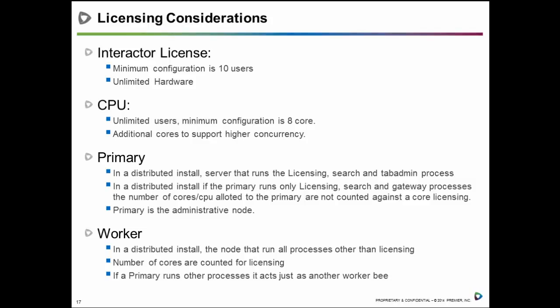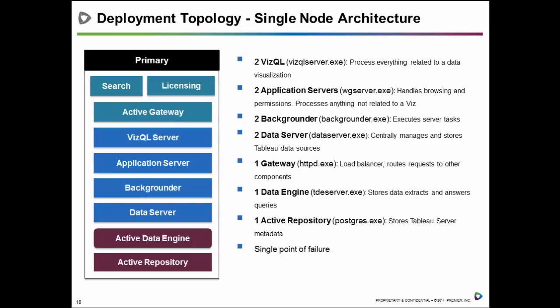In a single-node architecture, there is a complete single point of failure. If that server fails, you lose everything — the active gateway, all processes. Nothing can be made highly available in this topology.